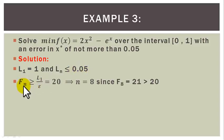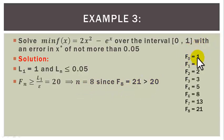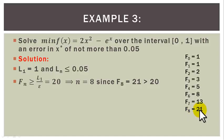We then determine N such that FN is greater than or equal to L1 over epsilon, that is 1 divided by 0.05 which is equal to 20. So we determine N such that FN is greater than or equal to 20, and this N is equal to 8, since F8 is equal to 21. Here: F0 is 1, F1 is 1, F2 is 2, F3 is 3, F4 is 5, F6 is 8, F7 is 13, F8 is 21 — so the smallest integer for which FN is greater than 20 is 8, because F8 is 21 which is greater than 20.